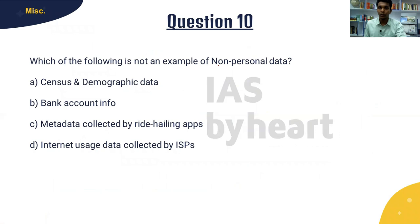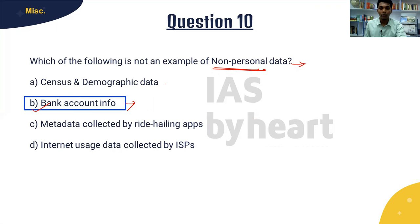The final question is about non-personal data — which of the following is NOT an example? Non-personal data is data from which an individual cannot be directly identified. The options are: census and demographic data, bank account information, metadata collected by ride-hailing apps, and internet usage data collected by ISPs. The answer is B — bank account information, which is personal data. All other options are non-personal data.